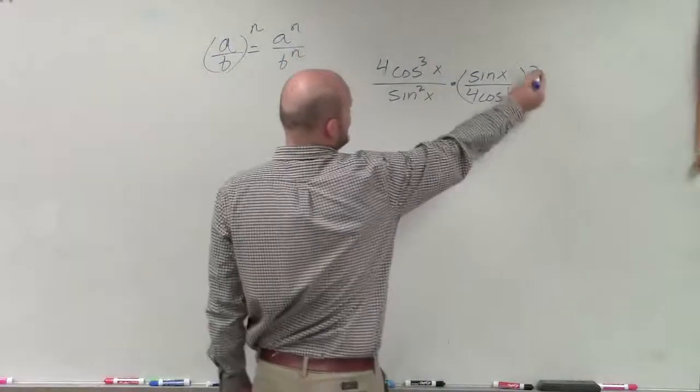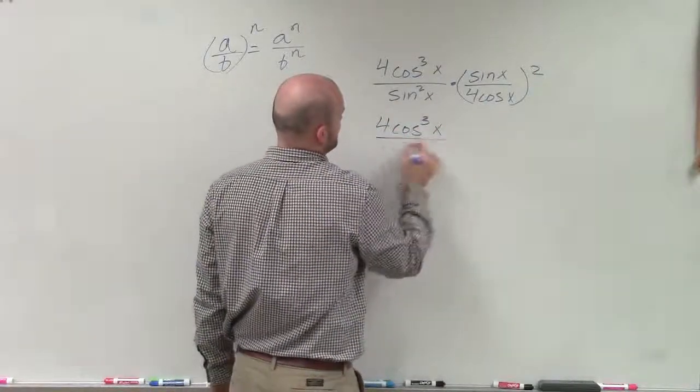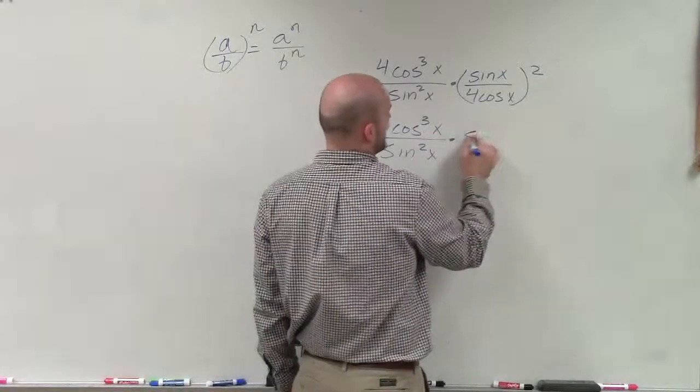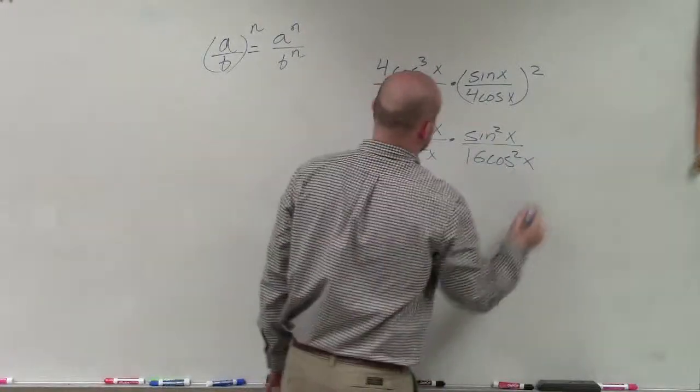So I can distribute this 2 here, or this squared. So I have 4 cosine cubed of x divided by sine squared of x is now going to be multiplied by sine squared of x divided by 16 cosine squared of x.